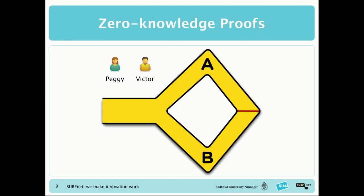What you see on the slide is a very abstract version of Alibaba's cave. On the left-hand side is the entrance to the cave, on the right-hand side is a door — the red line — and there are two paths through which you can reach the door. We have two actors: Peggy the prover, who wants to prove to Victor the verifier that she knows how to open the door, but without revealing how she does it.